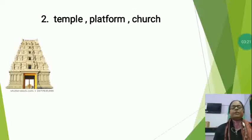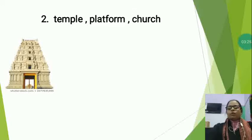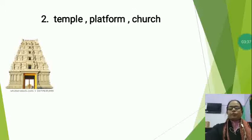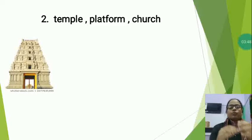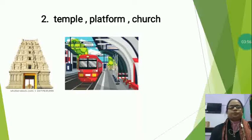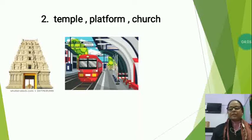Students, temple is a place where God is worshipped. It is made from different materials like wood, gold, concrete, stone, etc. Hindus make offerings to a god and goddess in a temple. Hindus go to temple to worship God. Now the next is platform. Students, a platform lets passengers get on and off the train easily and safely. Many stations have shelters, ticket cells, and benches that you can see at the platform.